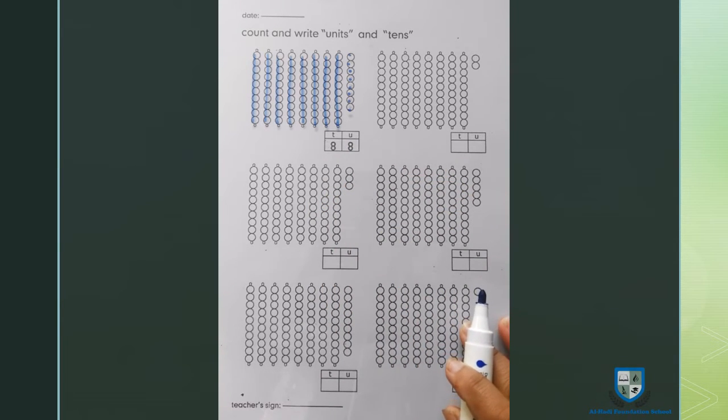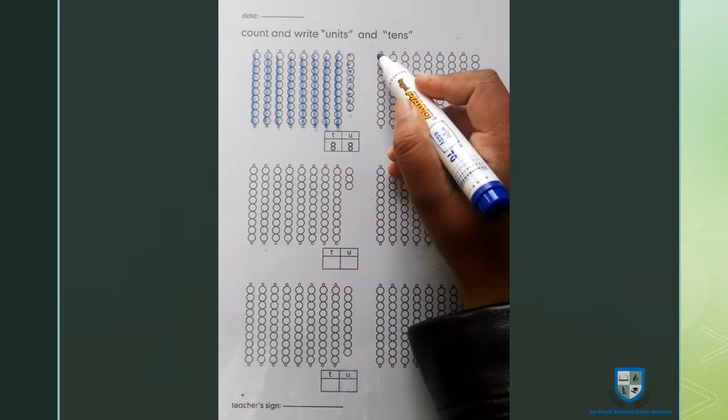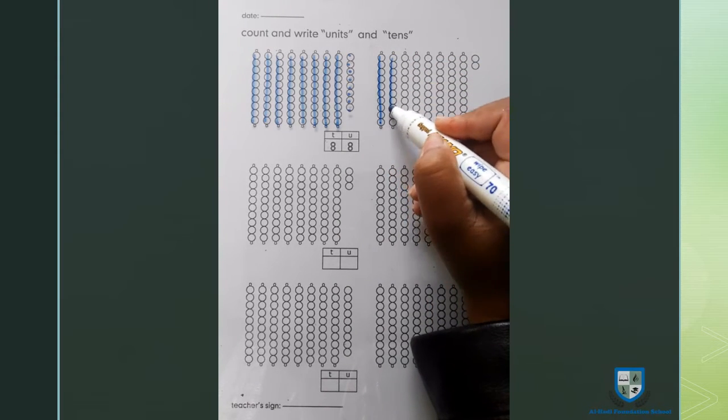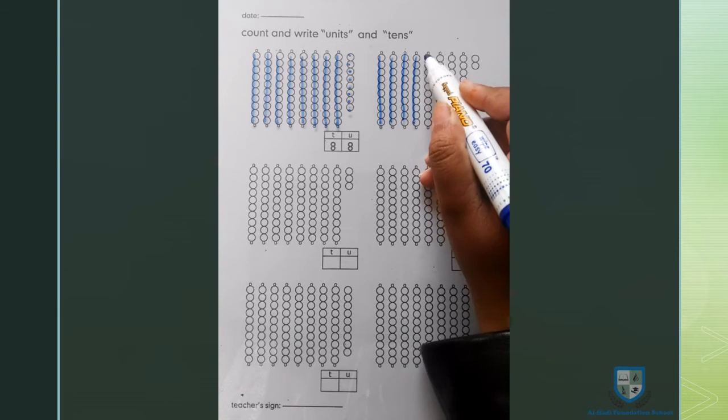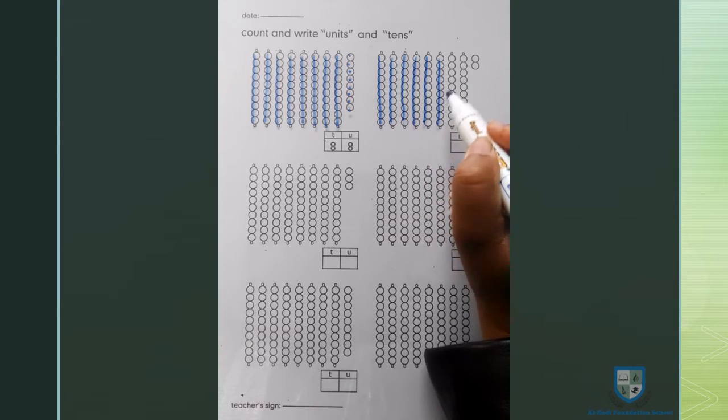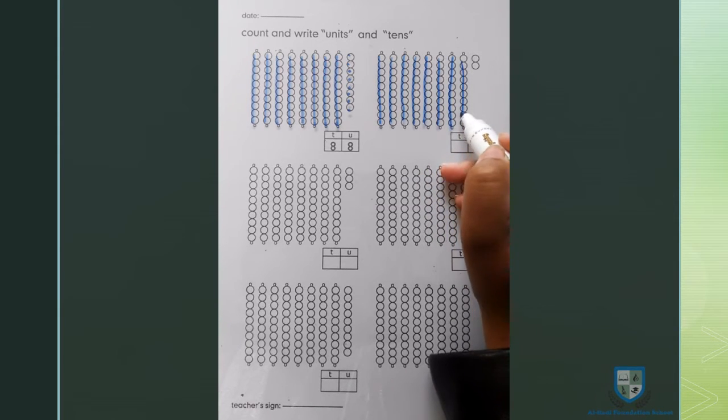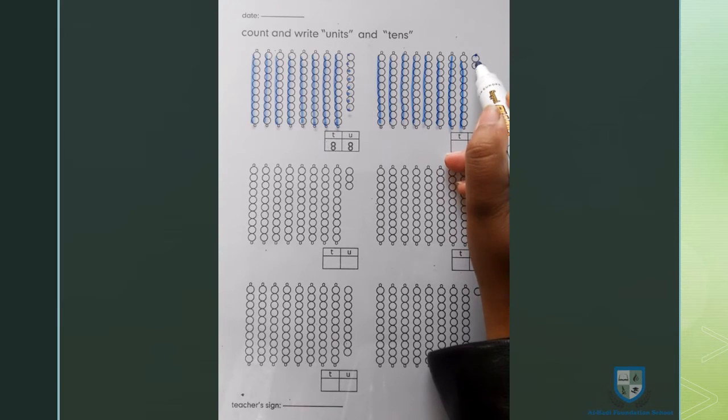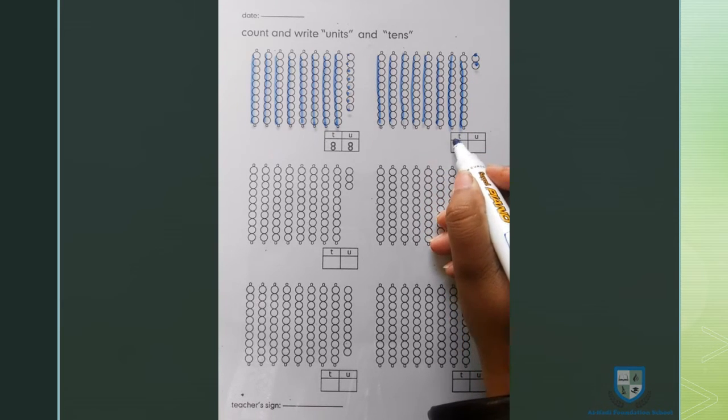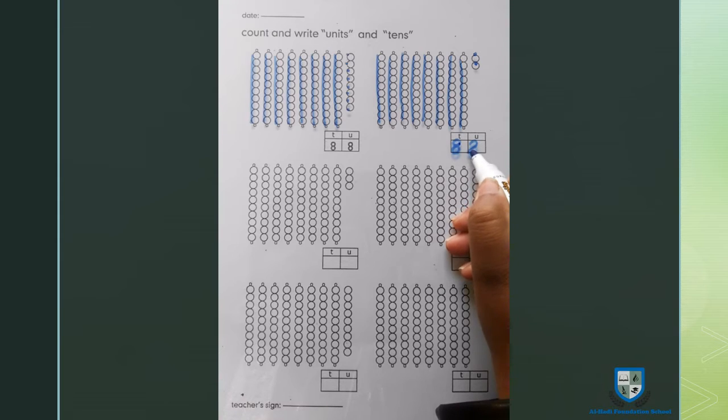अब आप अगली beads को count करते हैं। 10, 20, 30, 40, 50, 60, 70, 80, 81, 82. 8 tens, 2 units. 82.